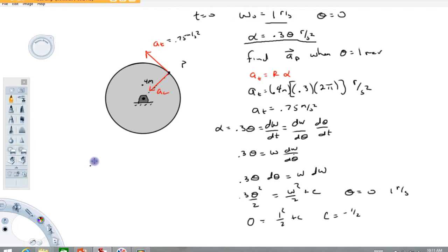So I'm going to go ahead and rewrite this equation including the constant. So we're going to have 0.3 over 2 theta squared is going to equal omega squared over 2 minus 1 half. And the next step here is to solve for the angular velocity after this thing has went around one time. So if we do that, this is going to read 0.3 over 2 times theta squared equals the angular velocity squared over 2 minus 1 half. We solve this for the angular velocity. When I get out of this, I get 3.58 rad per second.